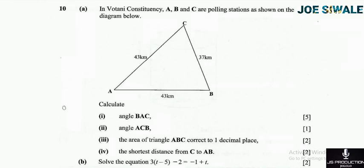Question A reads: In Botani constituency, A, B, and C are polling stations as shown on the diagram below. Calculate number one: angle BAC — 5 marks.